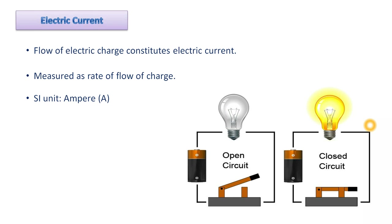Once current flows, it reaches the bulb. If the current is high enough, it is able to glow the bulb. Inside the bulb there is a filament, and as the current flows through the filament it gets heated up. When the filament gets heated up, it glows — that is basically how a bulb glows.